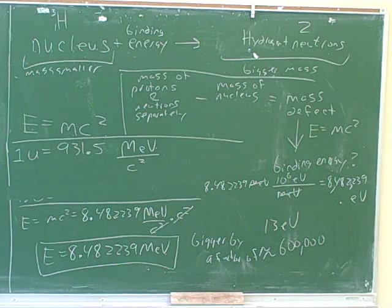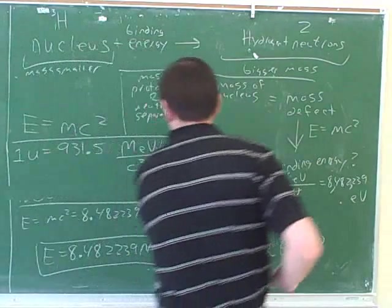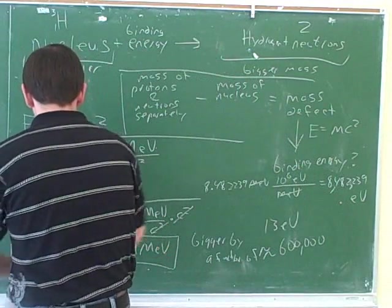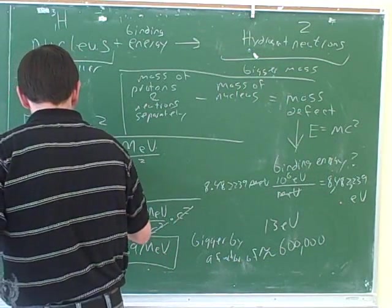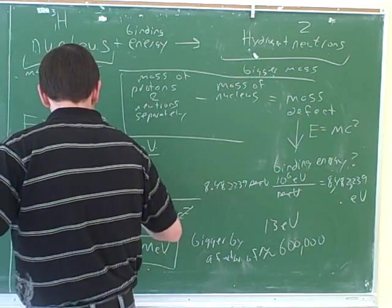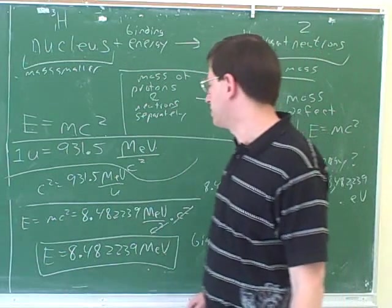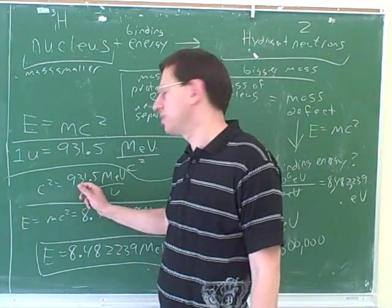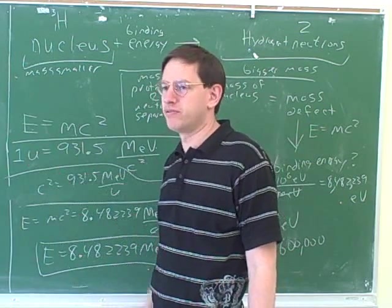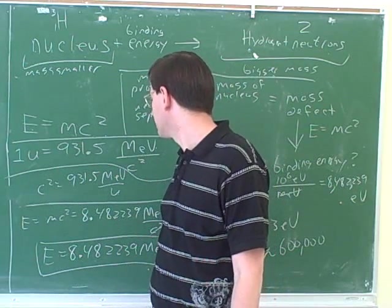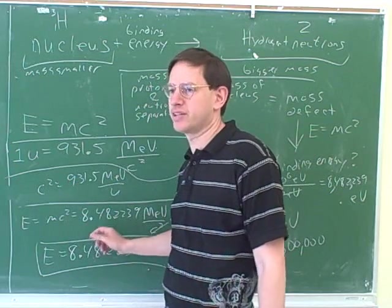You can see that on this test on the front cover, he gave this information here. He actually didn't quite put it the way I put it on the board, did he? So he would write it like this, c squared equals 931 MeV over u. All he did is he interchanged the c squared and the u. So if you wanted to, you could still take that information he gave you and use it to figure out the u's, which I think is the most intuitive way to do this. So you'd have to process the information he gave you a little bit to do the problem using our technique.